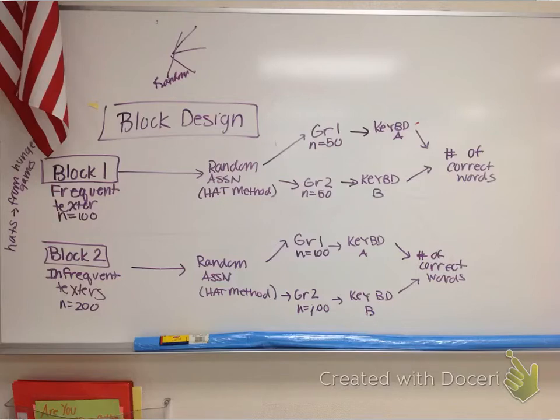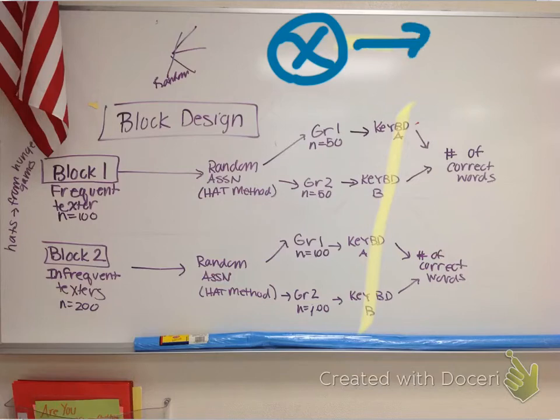Please read the notes that I posted from day four about block design and why we use it. But here is block design. It is dealing with example 21, I believe, over texters. And what they want to do is they want to take an x variable, and that x variable is the keyboard, which you see highlighted right here. They want to compare keyboard A and keyboard B. So our x variable here is keyboard A and keyboard B. And we want to look at the response. And the response is here, the number of correct words.